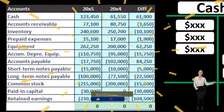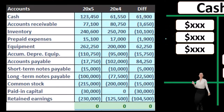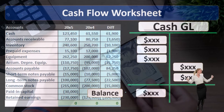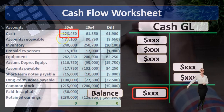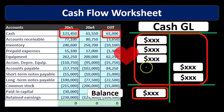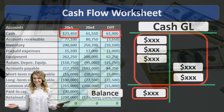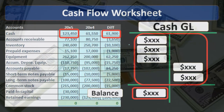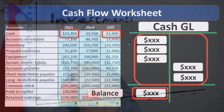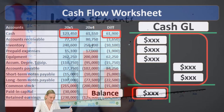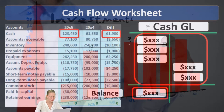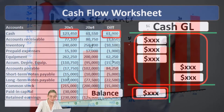We can go through the actual GL and try to categorize all the cash activity, because that activity represents the change from one period to the next, which gives us our ending balance that ties to the balance sheet. By adding up all this activity we get the change, which is what the statement of cash flows is looking for. We'd be categorizing those changes into basic categories: operating, investing, and financing activities.